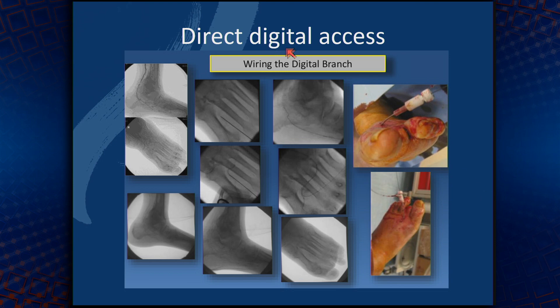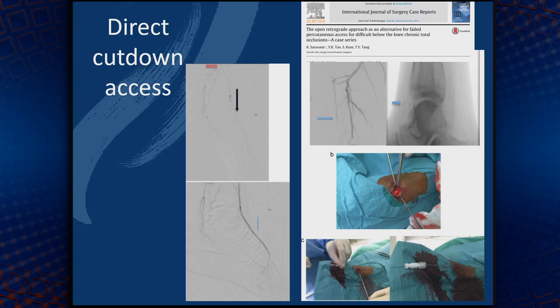Several authors — for example Malcolm Manzi — have had very good experience with direct digital access puncture. In my experience, I've had difficulty hitting a very small digital vessel, and it tends to have a lot of spasm, so I don't have much experience with direct digital access. What we have had experience with as surgeons is a direct cutdown of the dorsalis pedis artery when ultrasound and fluoroscopy retrograde access has failed. This is a very benign procedure — small cutdown, isolate the artery, puncture it — and in our small series we've had no problems with the skin wound.